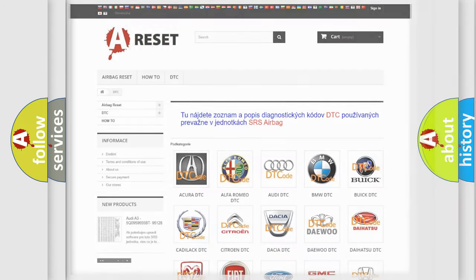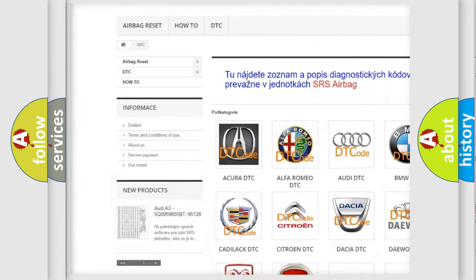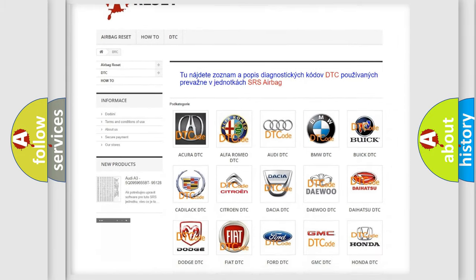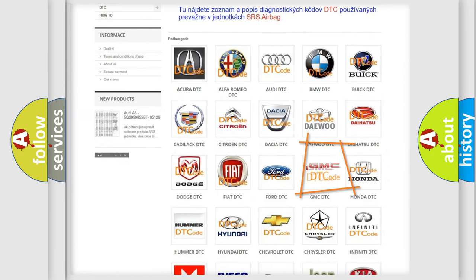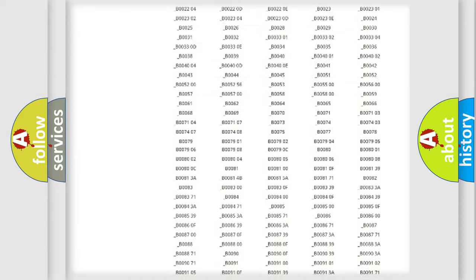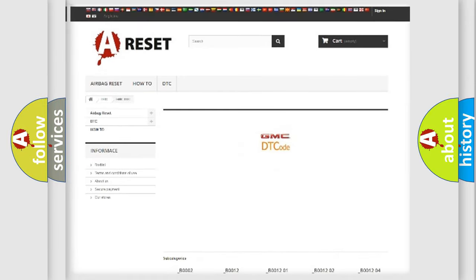Our website airbagreset.sk produces useful videos for you. You do not have to go through the OBD2 protocol anymore to know how to troubleshoot any car breakdown. You will find all the diagnostic codes that can be diagnosed in GMC vehicles.